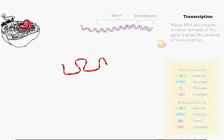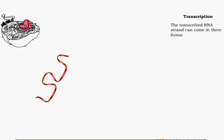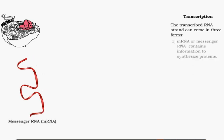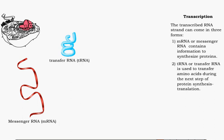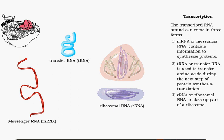The transcribed RNA strand can come in three forms. The first form is mRNA, or messenger RNA, and contains information to synthesize proteins. The second form is tRNA, or transfer RNA, and is used to transfer amino acids during the next step of protein synthesis, translation. And the third form is rRNA, or ribosomal RNA, which makes up part of a ribosome.